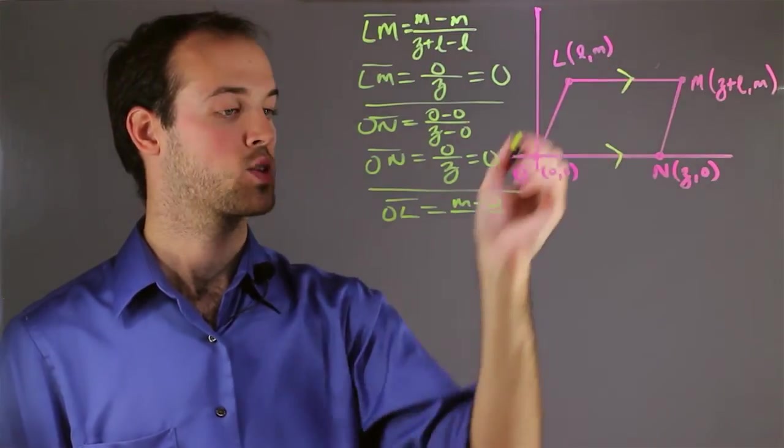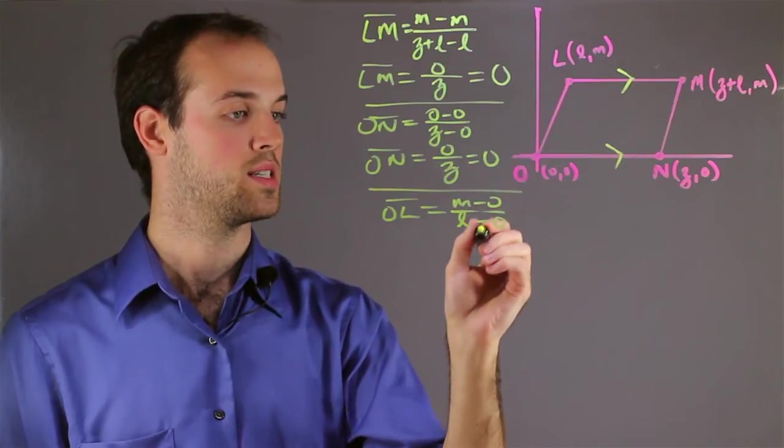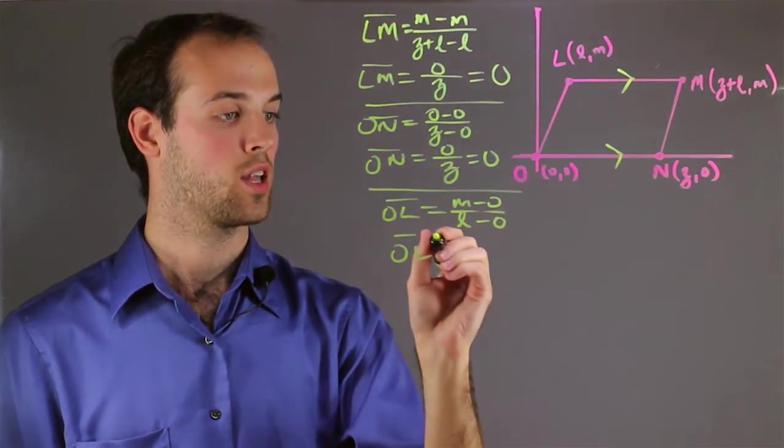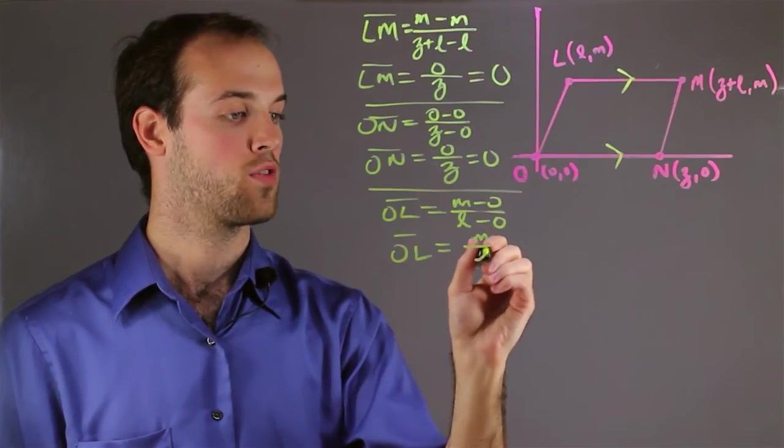And then I want to take the second x-coordinate, L, minus the first x-coordinate, zero, and I get that the slope of OL is equal to M over L.